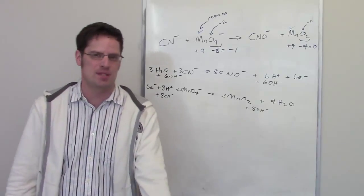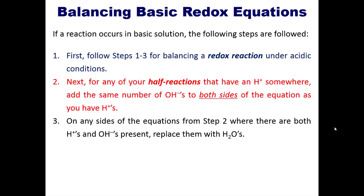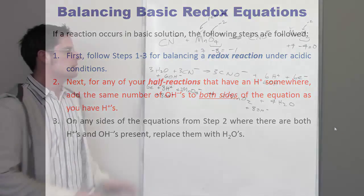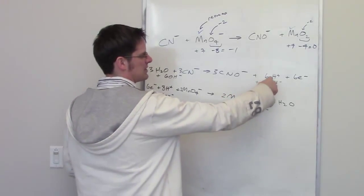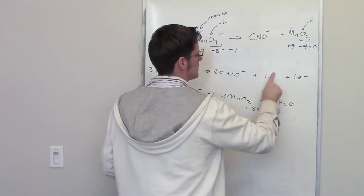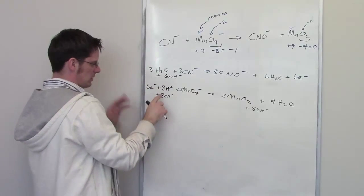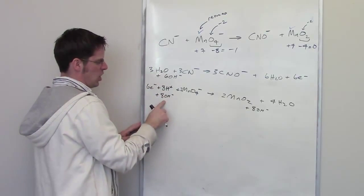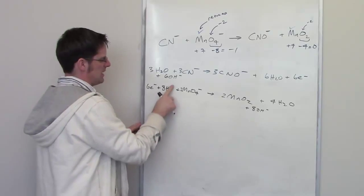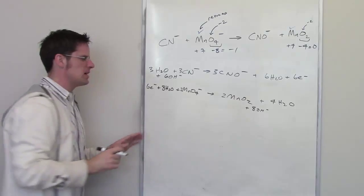The next step says: on any side where both H⁺ and OH⁻ are present, replace them with H₂O. In the oxidation half-reaction, six H⁺ and six OH⁻ combine to form six H₂O. In the reduction half-reaction, eight H⁺ and eight OH⁻ combine to form eight H₂O.